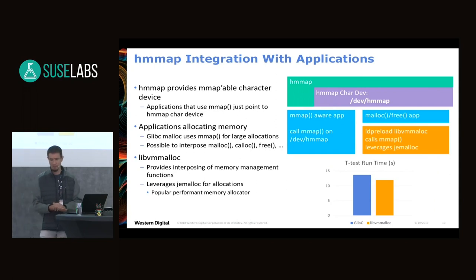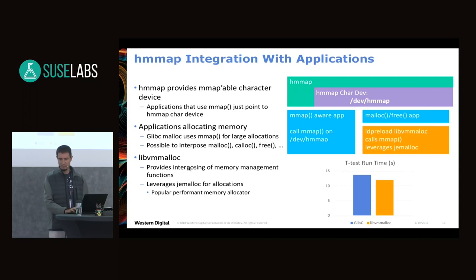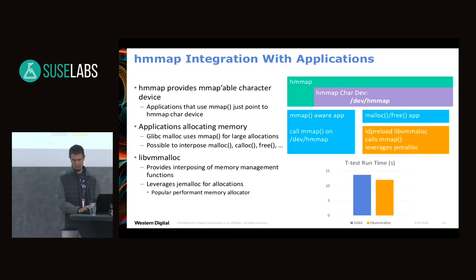For application integration, if an application already uses mmap, it simply mmaps the HMMap character device instead — pretty much no change. For applications using malloc, we use libvmmalloc with LD_PRELOAD so malloc calls go to libvmmalloc, which internally uses HMMap for its mmap. libvmmalloc's allocator is actually quite efficient — comparing it with the standard glibc allocator, libvmmalloc performs a little better.